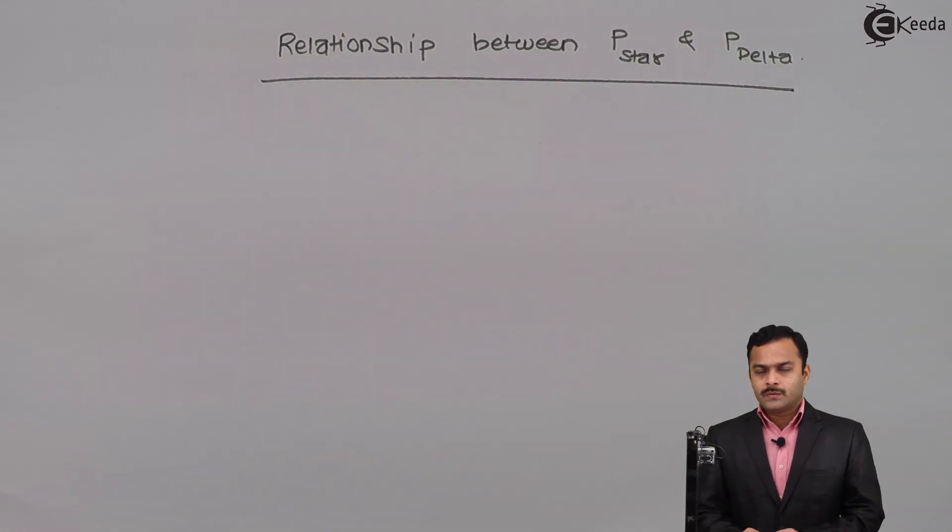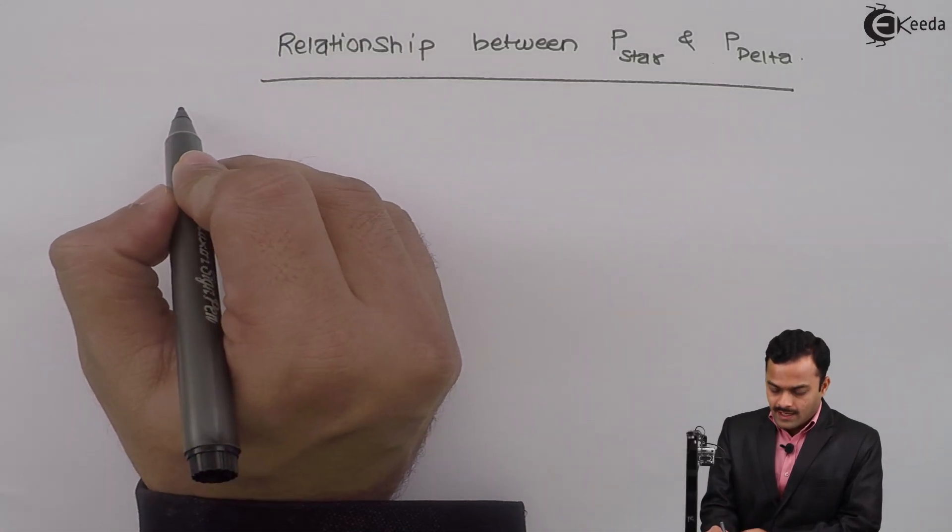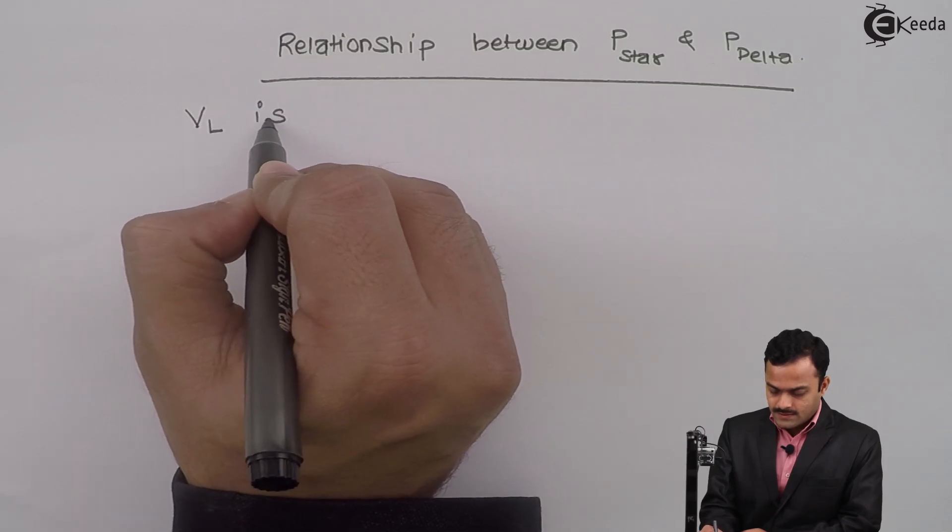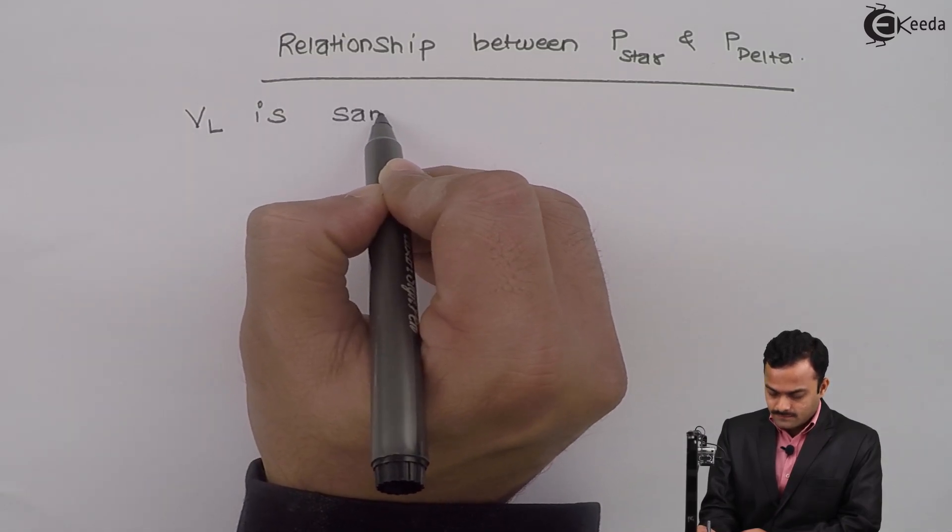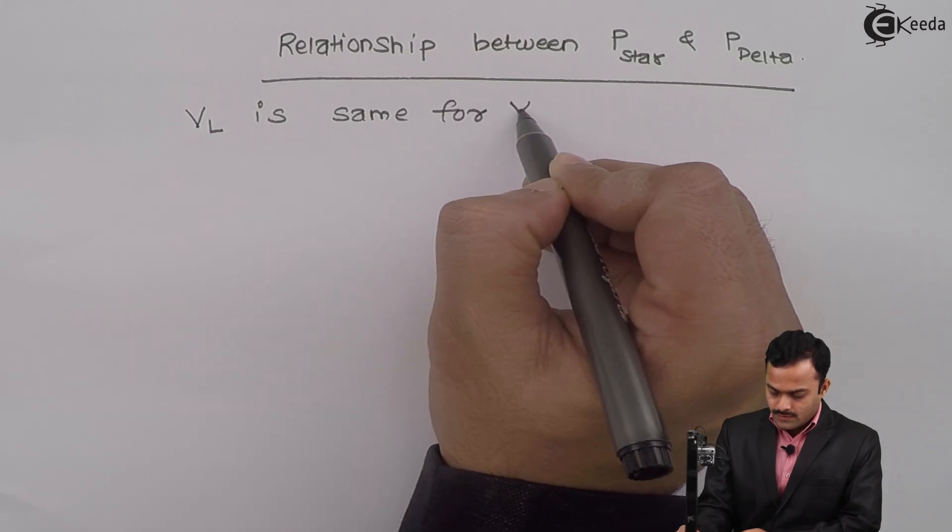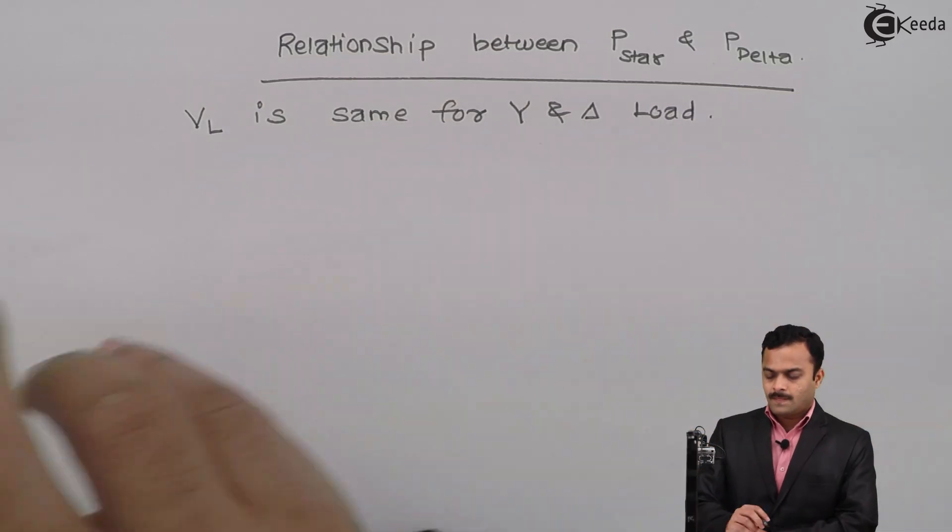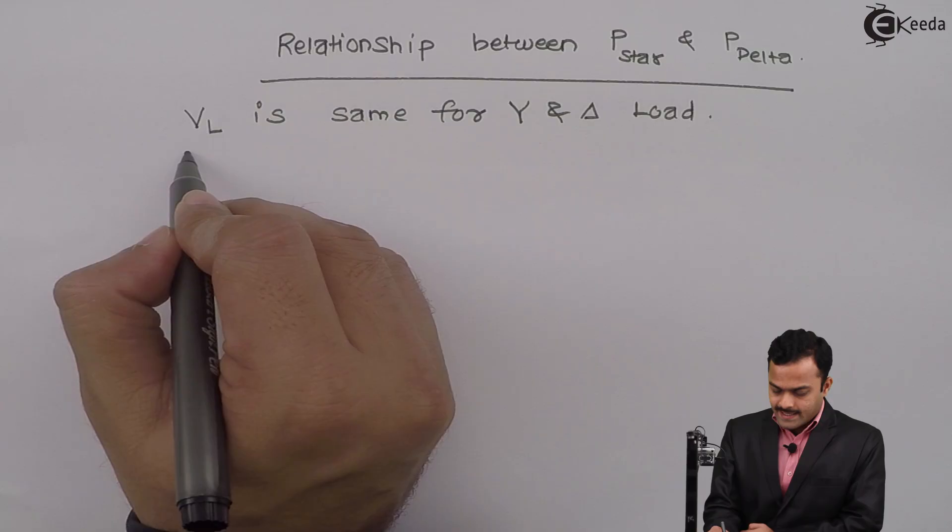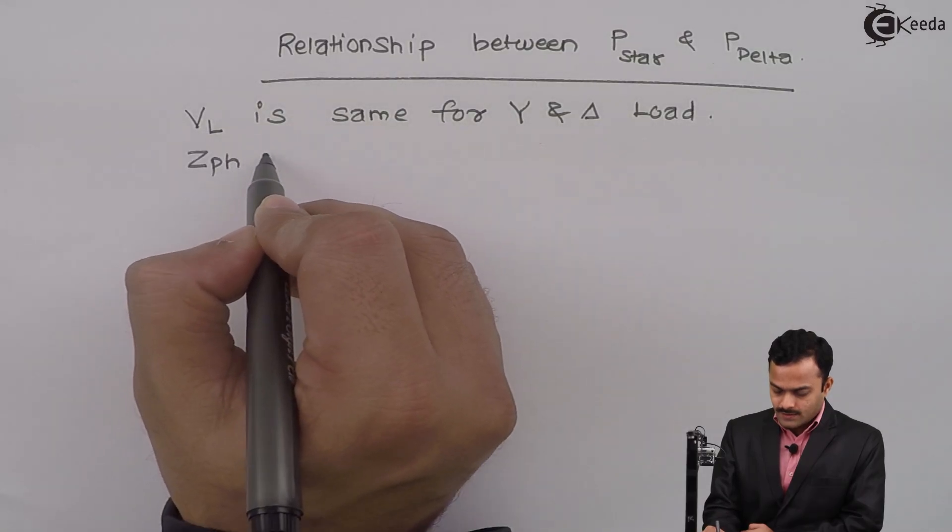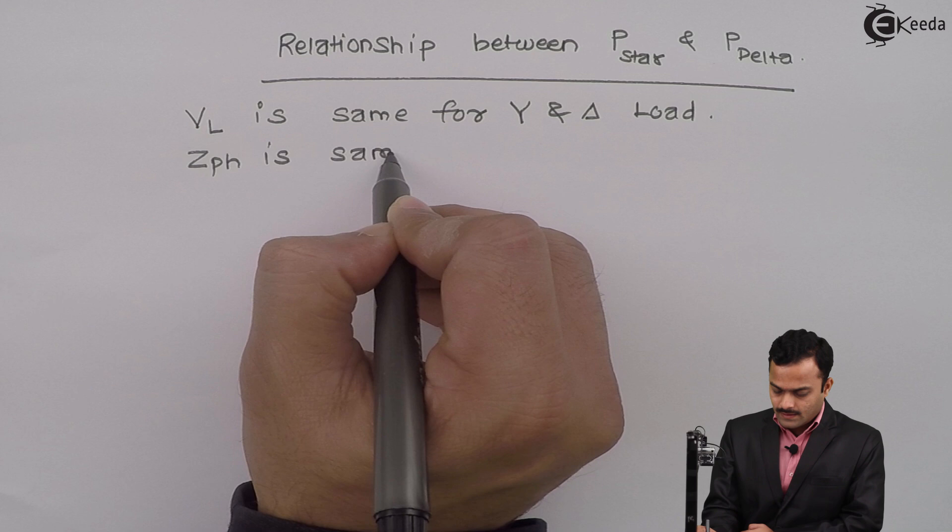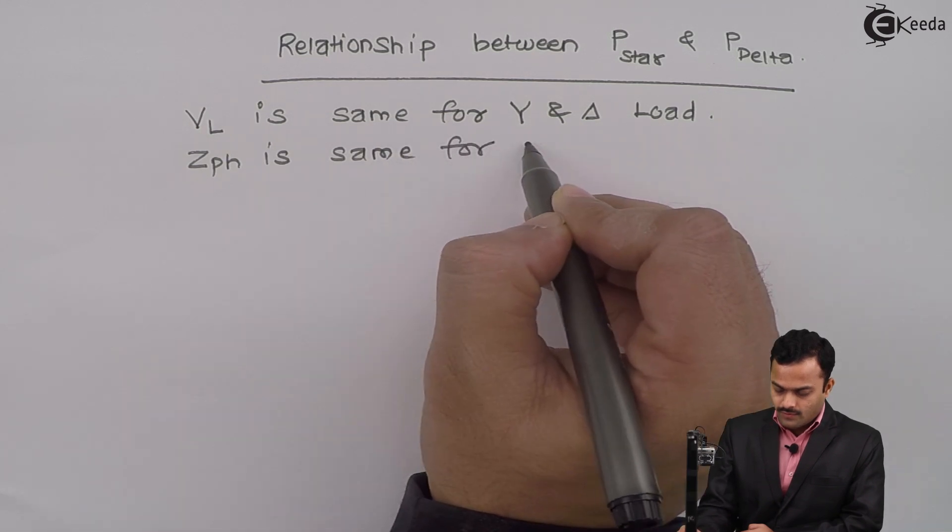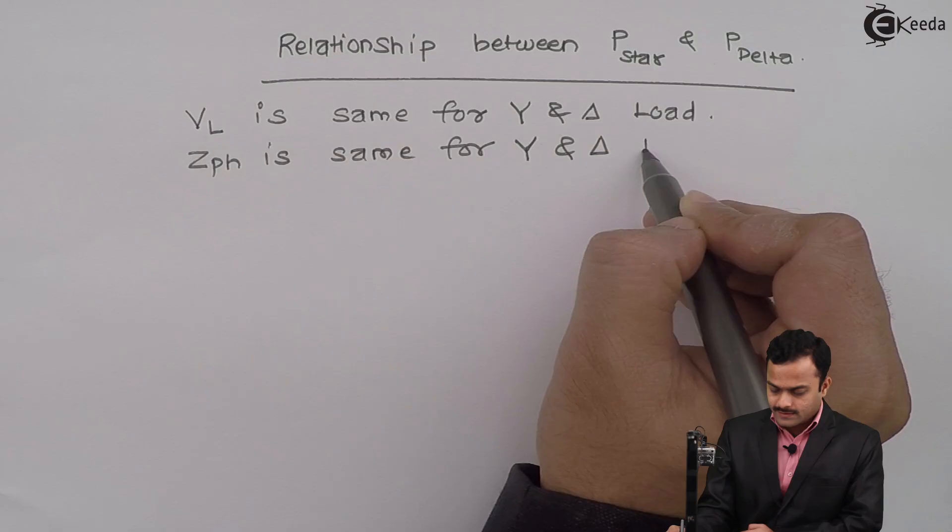While deriving the relationship between P star and P delta, two things we are keeping in mind. First thing, line voltage is same for star and delta load. And second is ZPH is also same for star and delta connected load.